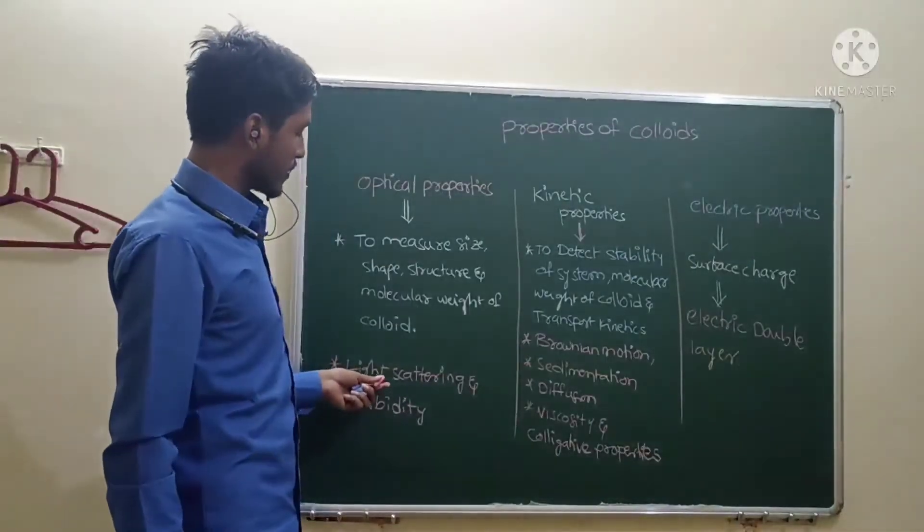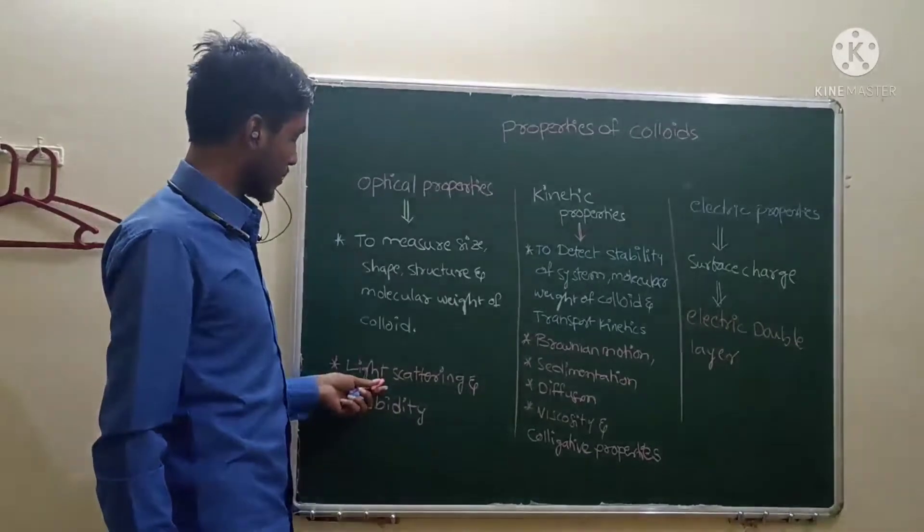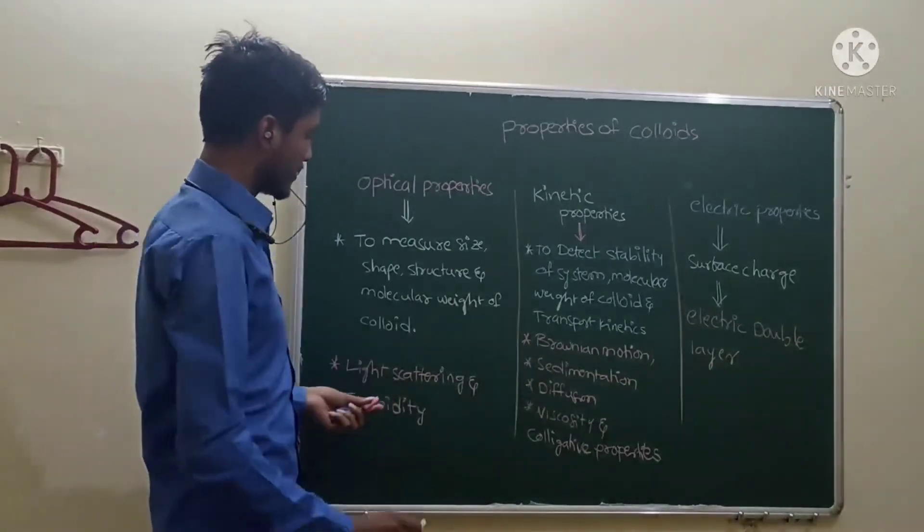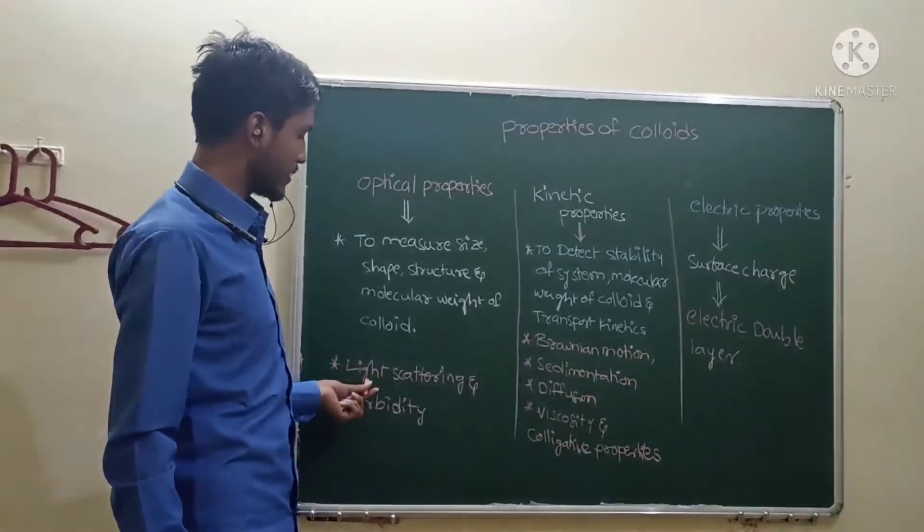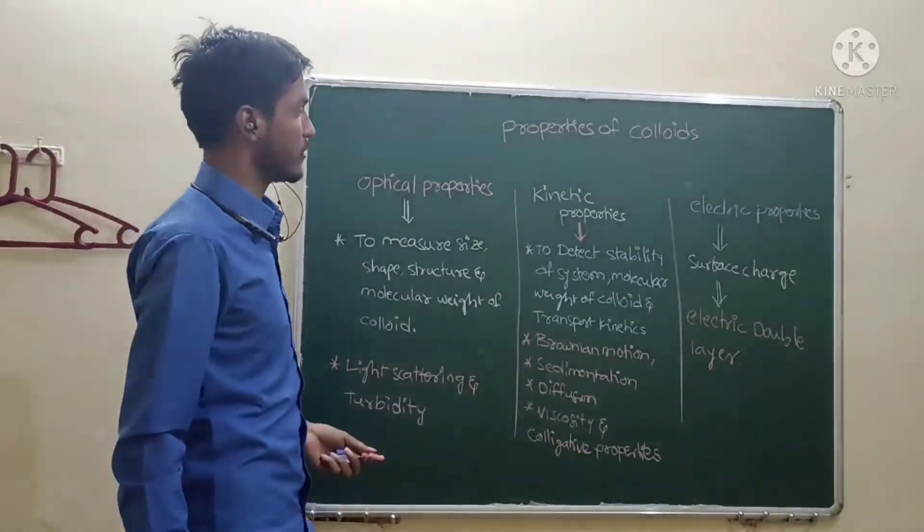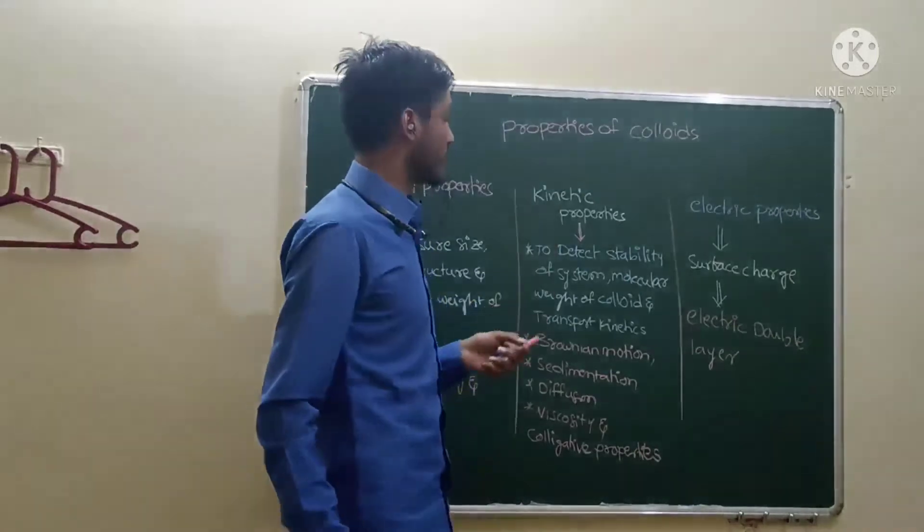By what methods we can determine is light scattering. In this, signal effect will come and turbidity. By using light scattering and turbidity method. Next one is kinetic properties.